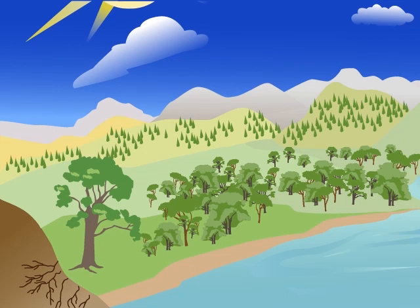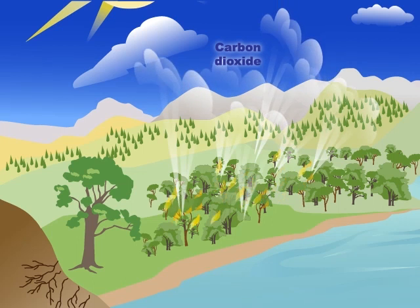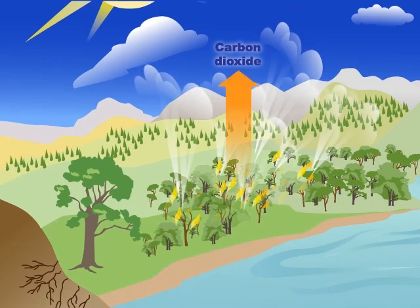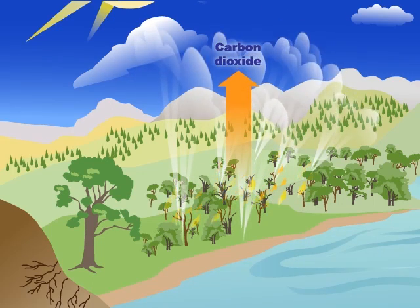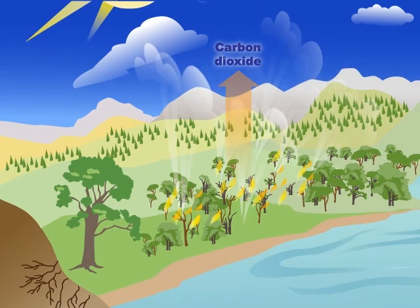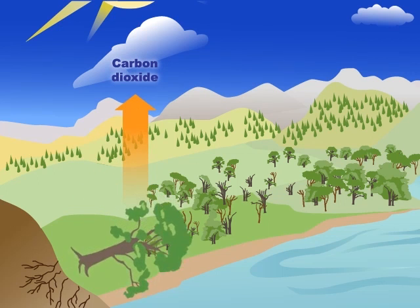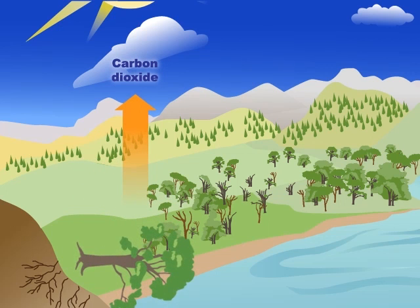One way that carbon dioxide gets into the atmosphere is when plants burn in a wildfire, and their carbon is converted back into carbon dioxide. Carbon dioxide also goes back into the atmosphere when plants and animals die and decompose.